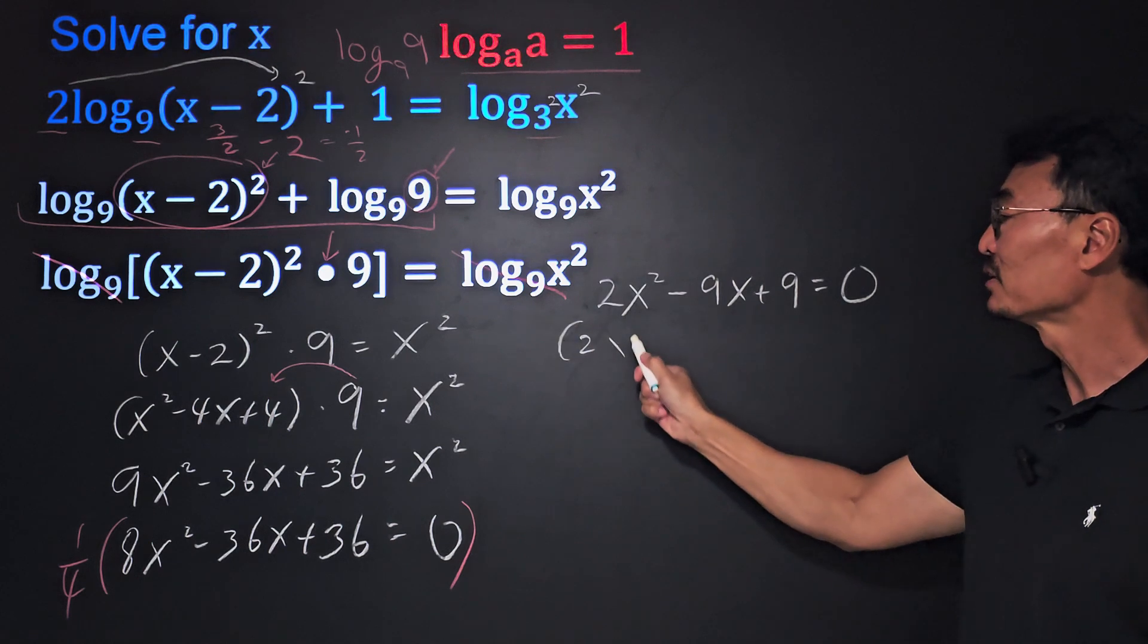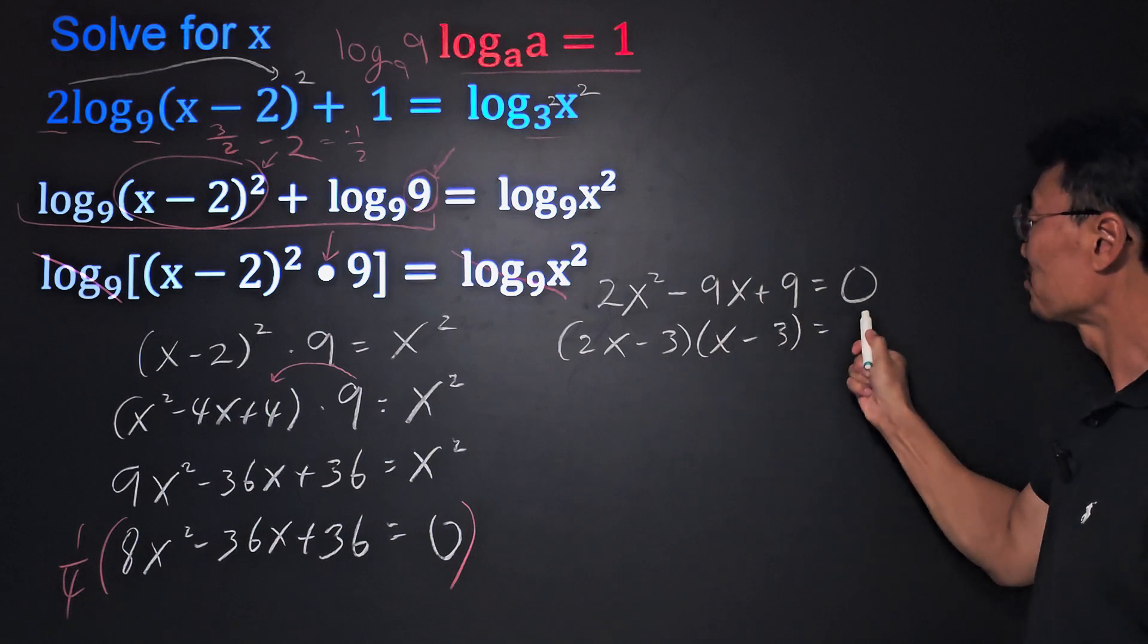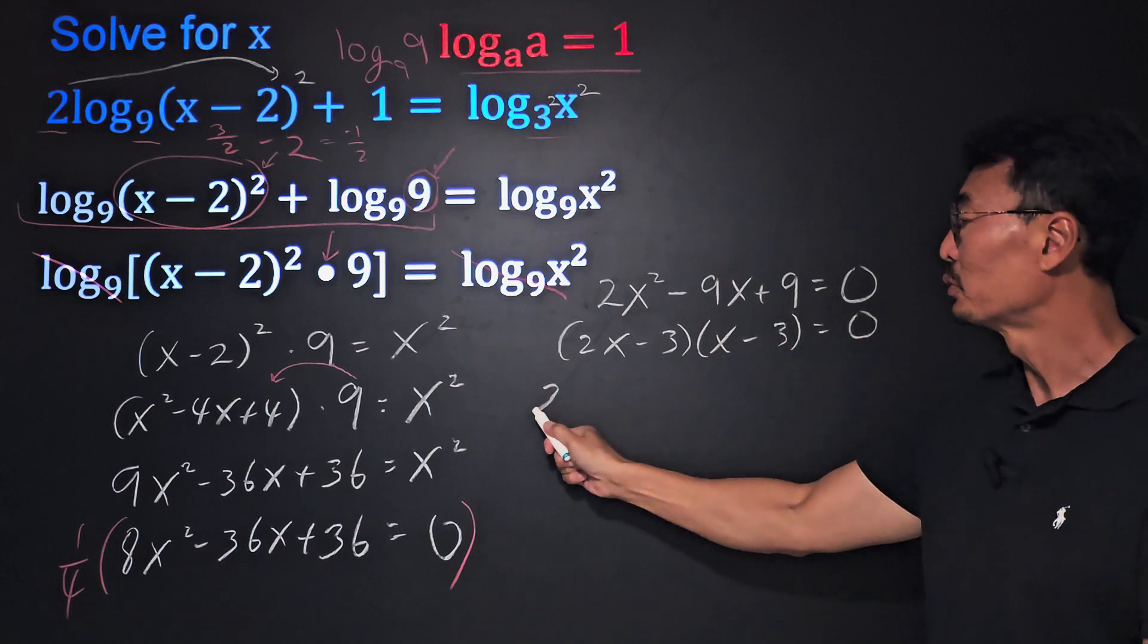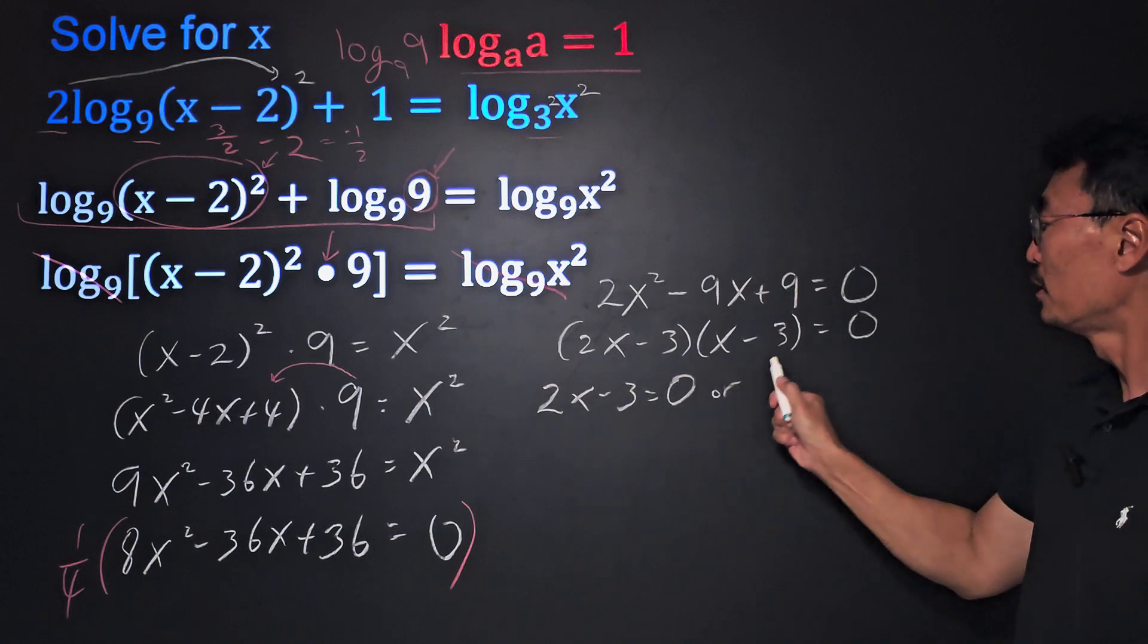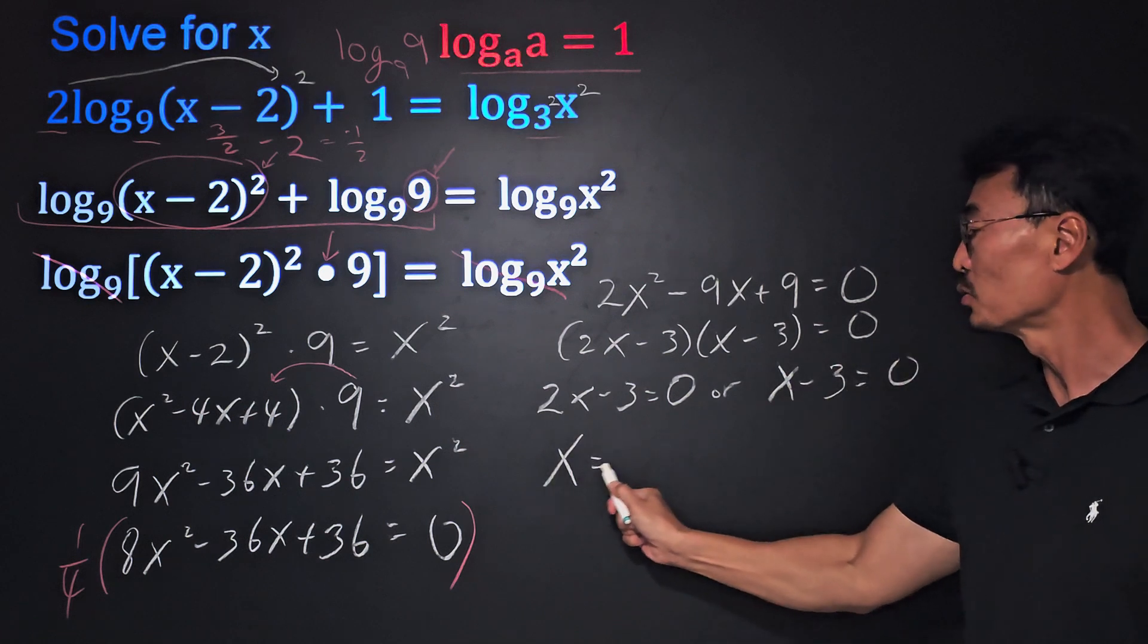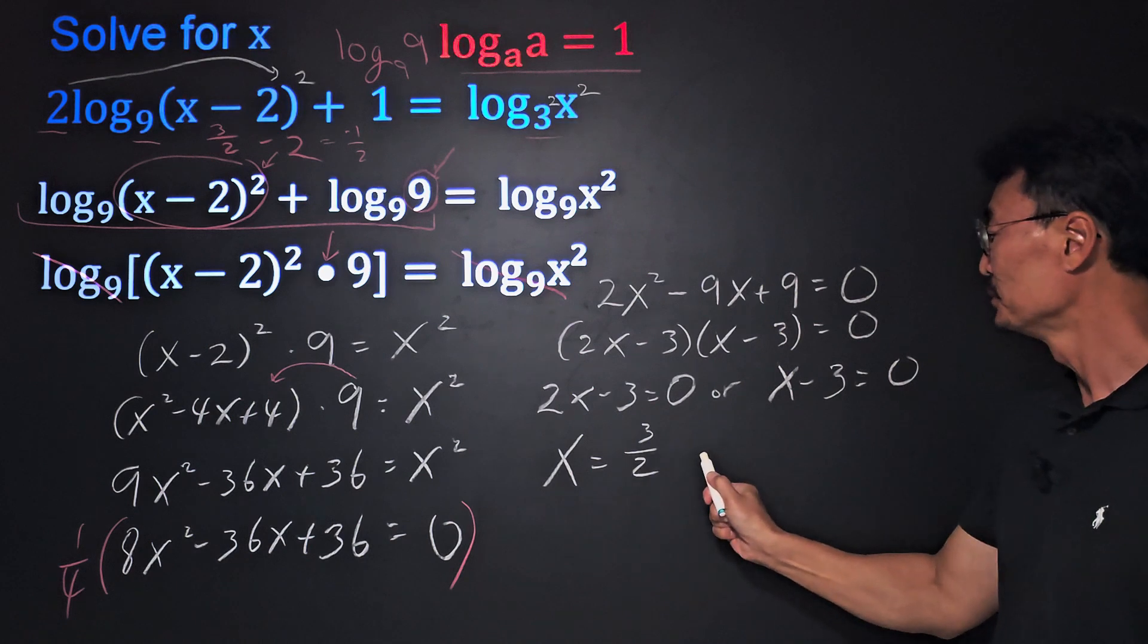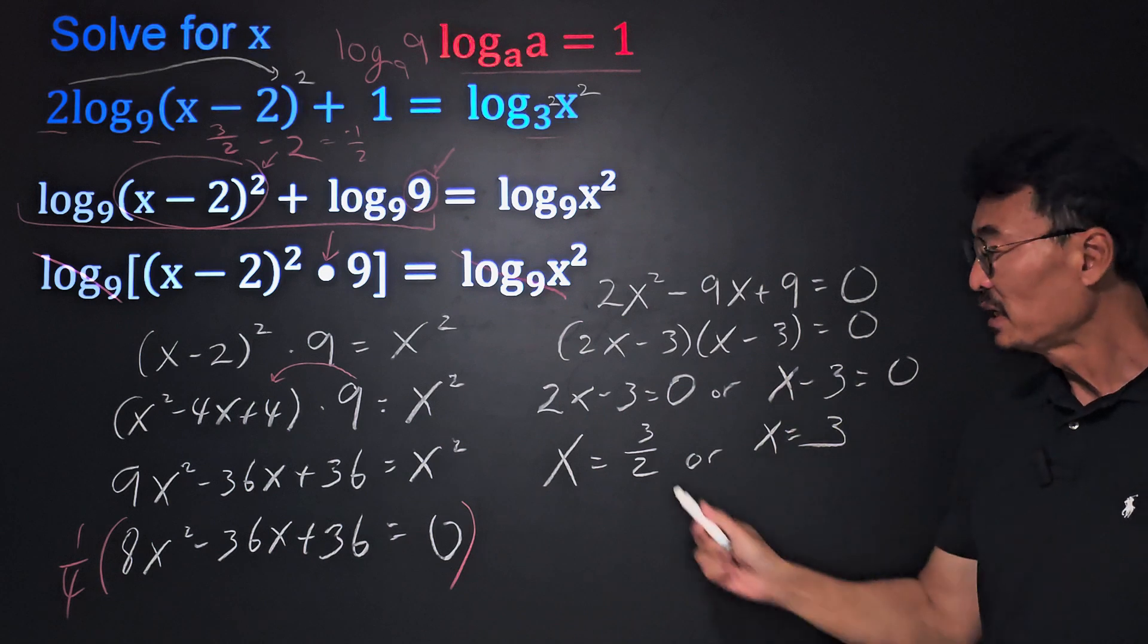And factoring this we end up getting 2x minus 3 times x minus 3, which where we get 2x minus 3 equals 0 or x minus 3 equals 0, or x equals 3 over 2 or x equals 3. Are they both our solution? They're not.